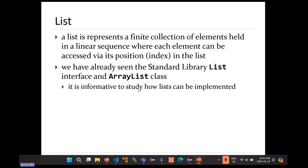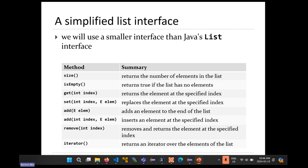For students who've already done this in a data structures course it's less novel, but for computing students who've never done this before it's useful to show exactly how these things work — for example, why does ArrayList have an O(N) remove method? We don't want to implement the full list interface since Java's list interface is quite rich. We're going to look at a small number of methods: get, set, add an element, remove an element, an insert-in-the-middle add method, and finally the new thing — an iterator method.